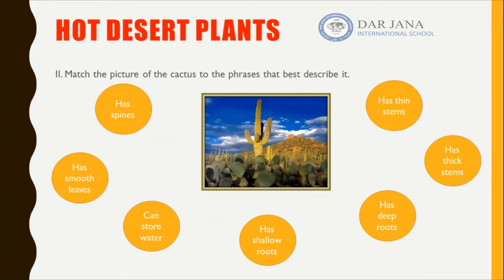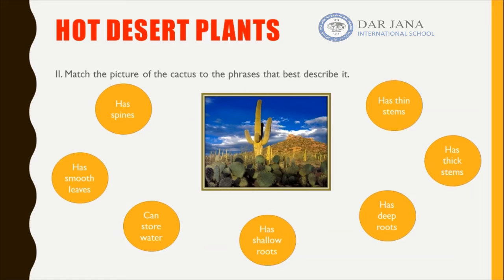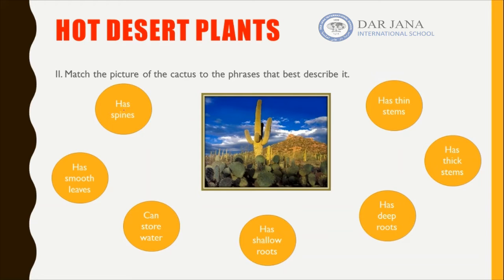We will read the phrases in the circles and decide which describe the cactus. First: has spines. If we look at the cactus in this picture, we see spines covering all of the plant. The spines protect it from thirsty animals, so we match this phrase. Next: has smooth leaves — of course not, because it has spines that will hurt you if you touch them, so we do not match this.